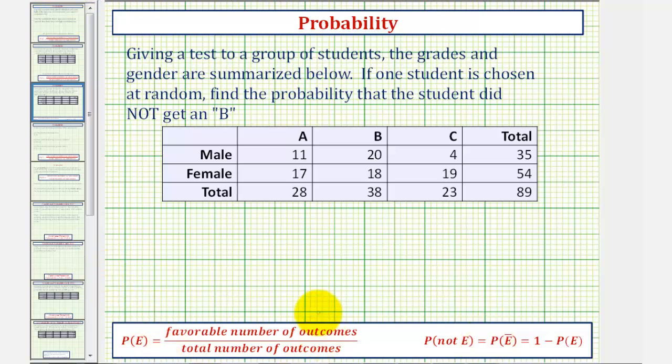So using the basic probability formula, the probability of a student not having a grade of B would be equal to the favorable number of outcomes divided by the total number of outcomes, or in this case, it would be the total number of students not getting a B divided by the total number of students taking the test. Well, looking at the table, if a student did not get a B, they either received an A or a C.